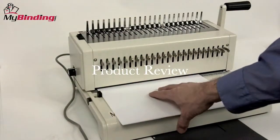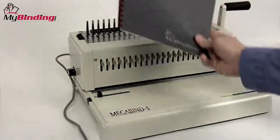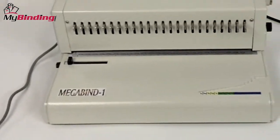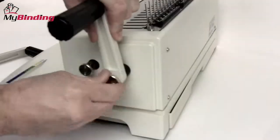This professional and heavy-duty punch and bind machine is a workhorse. Weighing in at 40 pounds with an all-metal construction, the Megabind 1E is built to last.